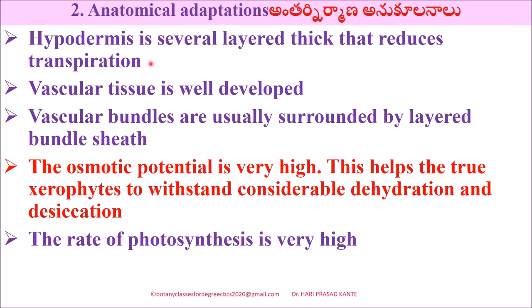Vascular tissue is well-developed compared to hydrophytes. Vascular bundles are usually surrounded by layered bundle sheaths. The osmotic potential is very high, which helps the true xerophytes to withstand considerable dehydration and desiccation.